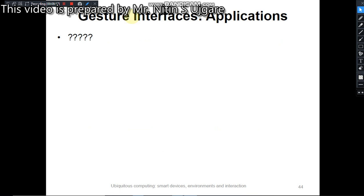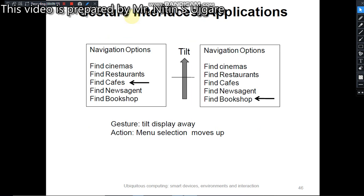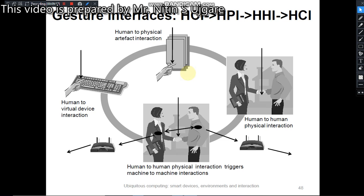There are many gesture interface applications. One example is rotating or flipping the hand, which results in an action that rotates or flips an image. Gesture interfaces are also used in navigation — tilting the display away results in the menu selection moving up, and tilting the display down results in the menu selection moving down. Another application is the two-finger stretch gesture, which results in stretching or resizing the image smaller or larger.